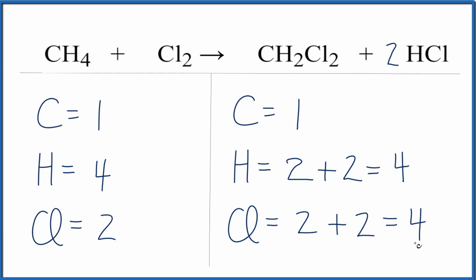So all we need to do is fix the chlorines. Since we have a two here, we need to have four. We'll put a two as our coefficient, two times two, that equals four, and that balances this equation.